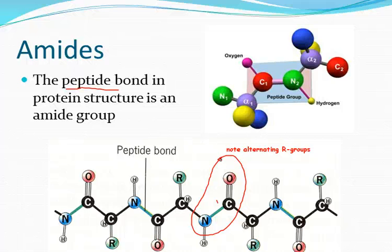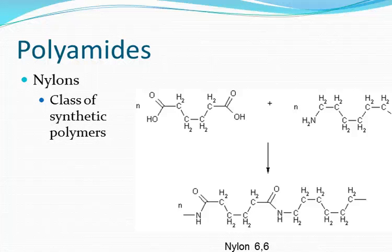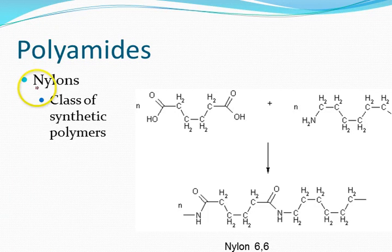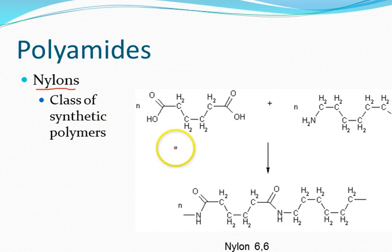So another important class of amides, there are polyamides. We can make these into polymers. We can link them up. Nylons are polyamides. Most nylons are polyamides. And there are a class of synthetic polymers that you all know about. So the one that I've shown on this slide, this is nylon 6-6. There are lots of different nylon polymers. This is one particular nylon polymer. But you can see when the monomer groups get linked together, again, here we have that amide linkage. So they're an important group.